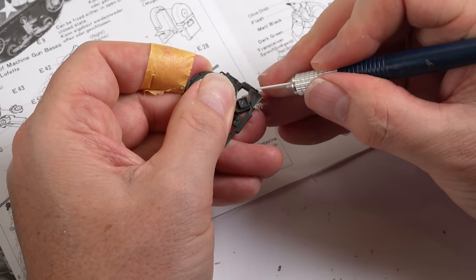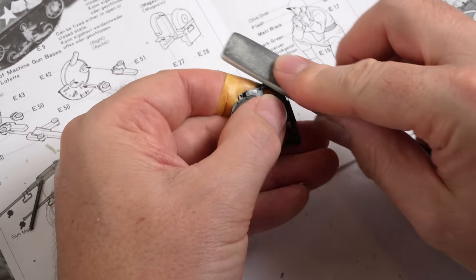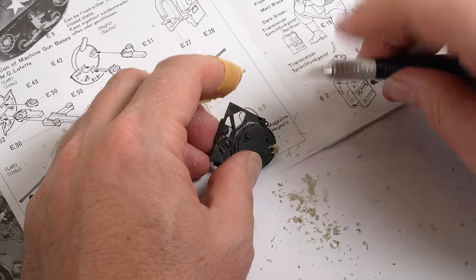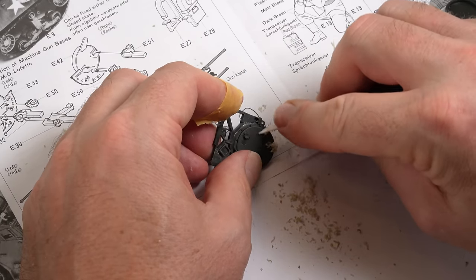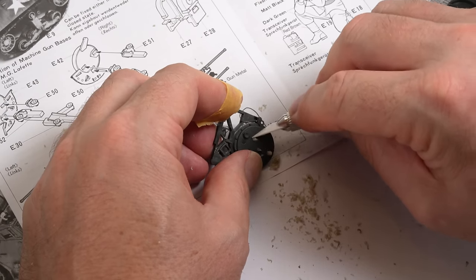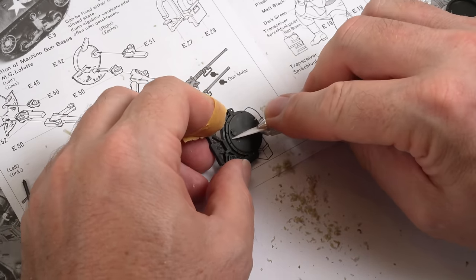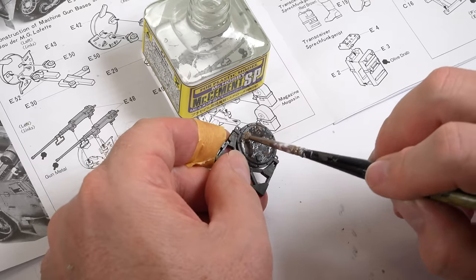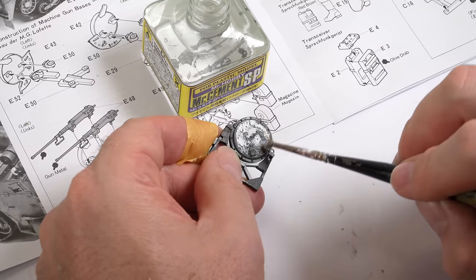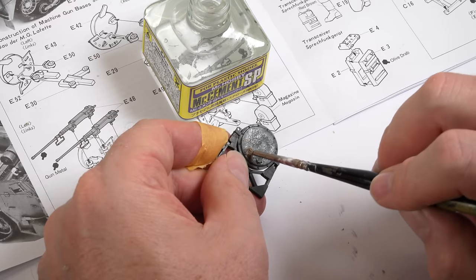Again there was a considerable amount of seam lines and pin marks in the pieces and this was fast becoming a common thread with this kit. The inner walls of the quad mount had three big ugly ejector pin marks in the otherwise lovely textured finish in the part. So back to the scraper it was, only this time I had to try and recreate the textured finish. I did this by applying a slow drying liquid cement over the area and then stippling it with an old brush. It looks a little rough now but it should look okay under a coat of paint.